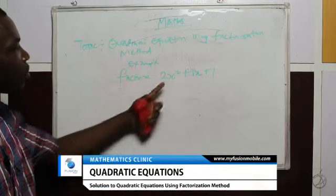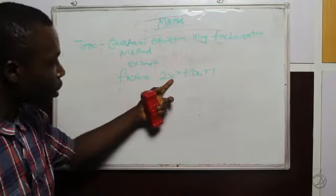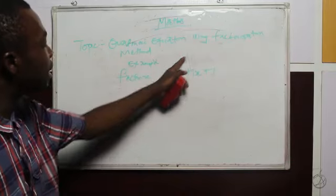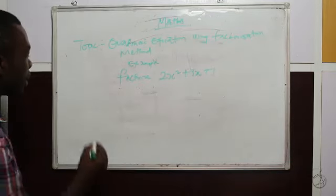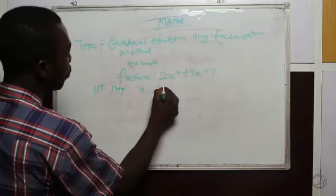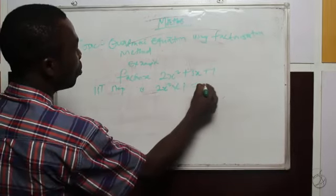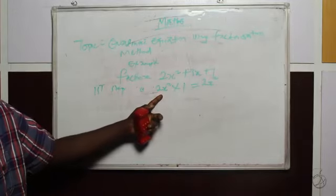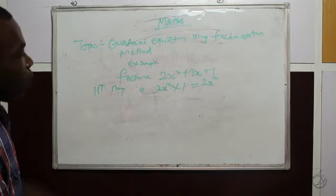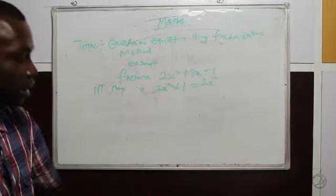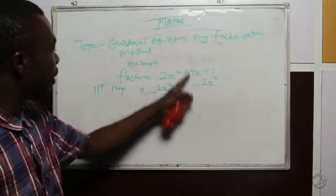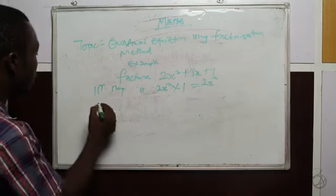The first step is that we multiply the coefficient of x² by the constant term. We multiply 2x² times 1, which gives us 2x². Now, what are the factors of 2x² that will replace +3x? We need the factors that satisfy 2x² and can replace +3x. Now, these are the factors.